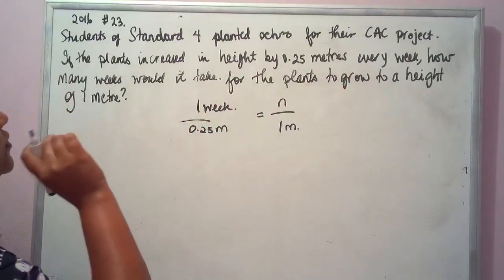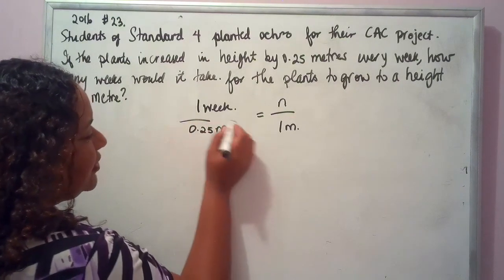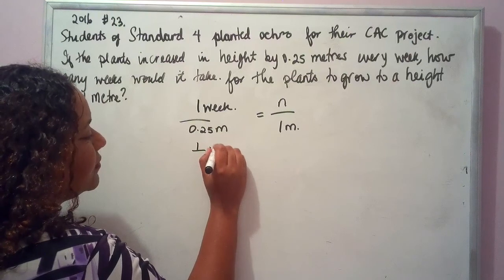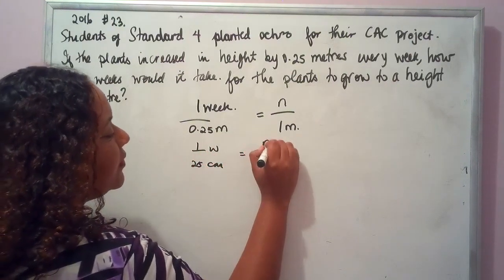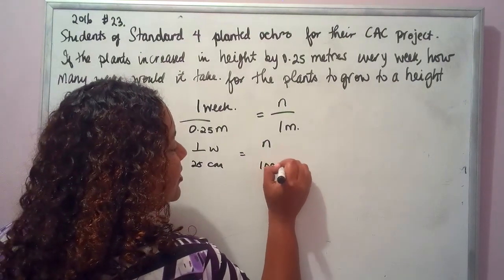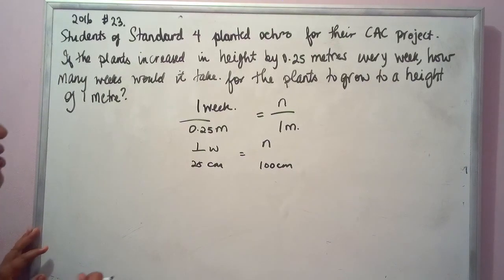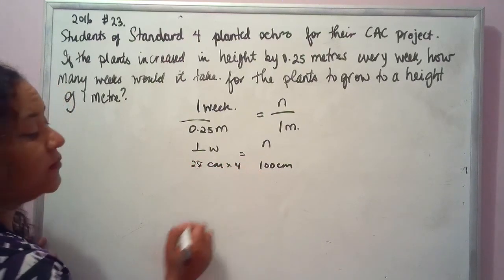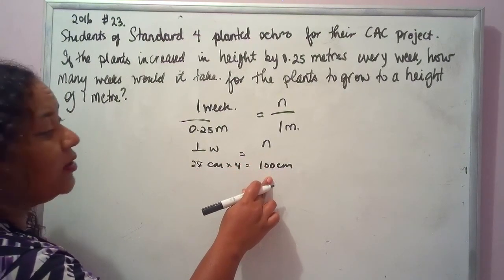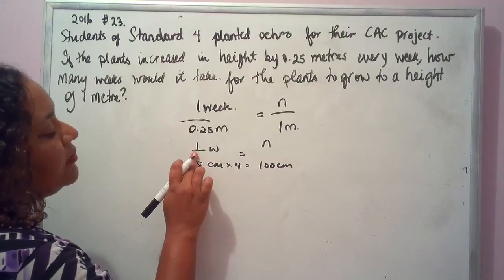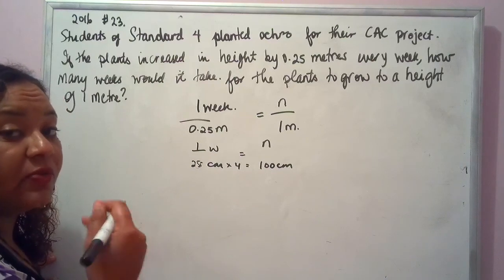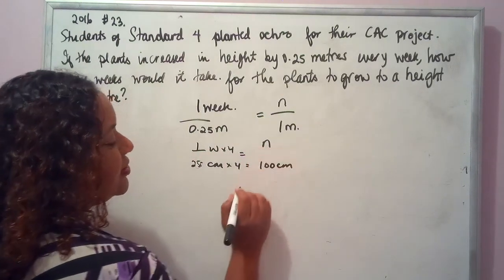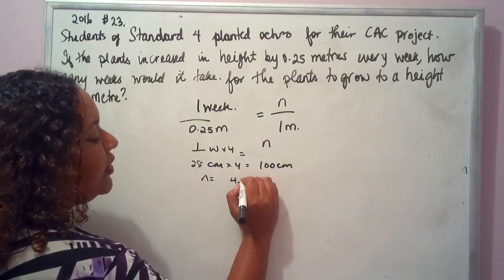Step 1: establish the relationship. One week the plant grows 0.25 meters, which equals N over 1 meter. Let's convert to centimeters: 1 week equals 25 centimeters, and we want to find N weeks to reach 100 centimeters. What do you do to 25 to get 100? Multiply by 4. So 25 by 4 equals 100, and 1 week by 4 equals 4 weeks. N equals 4.